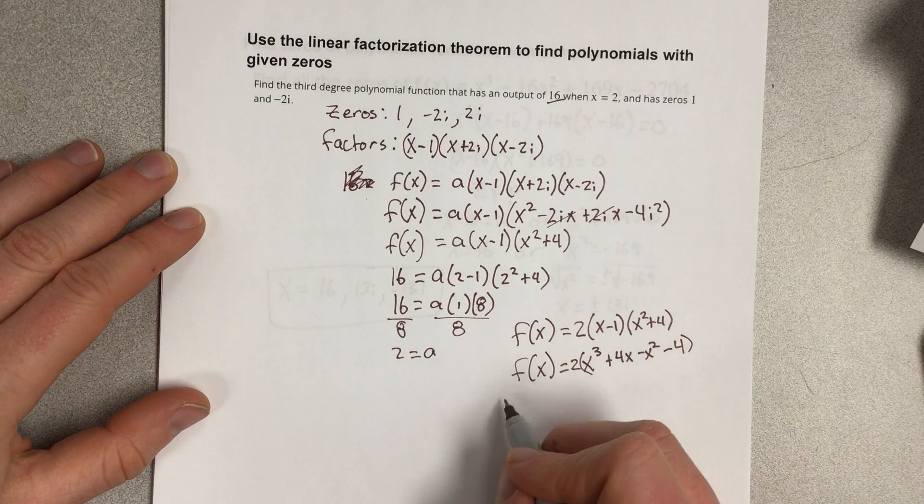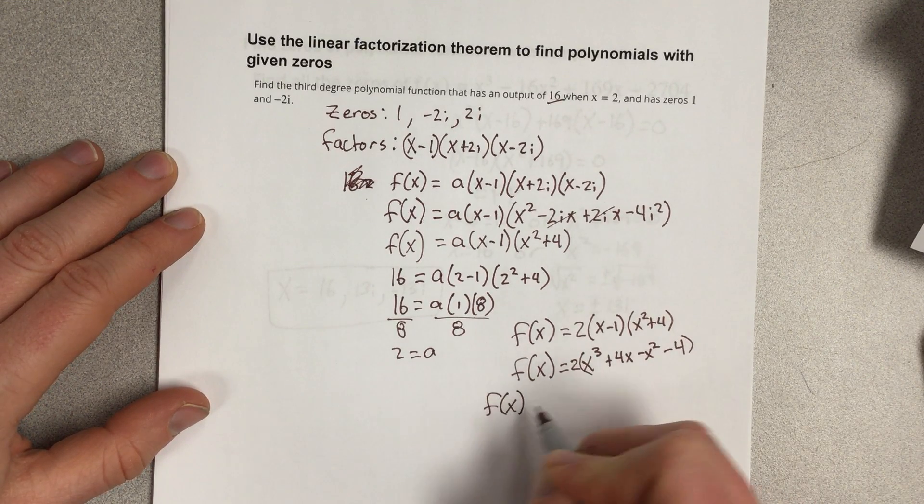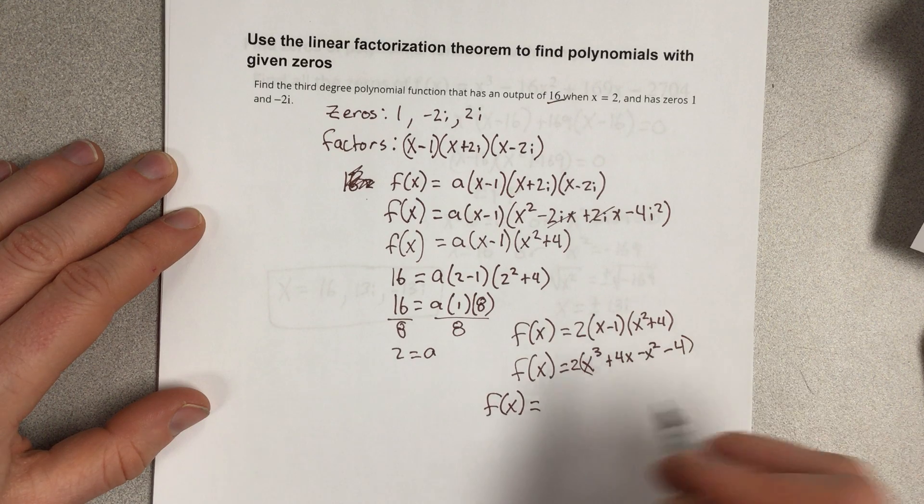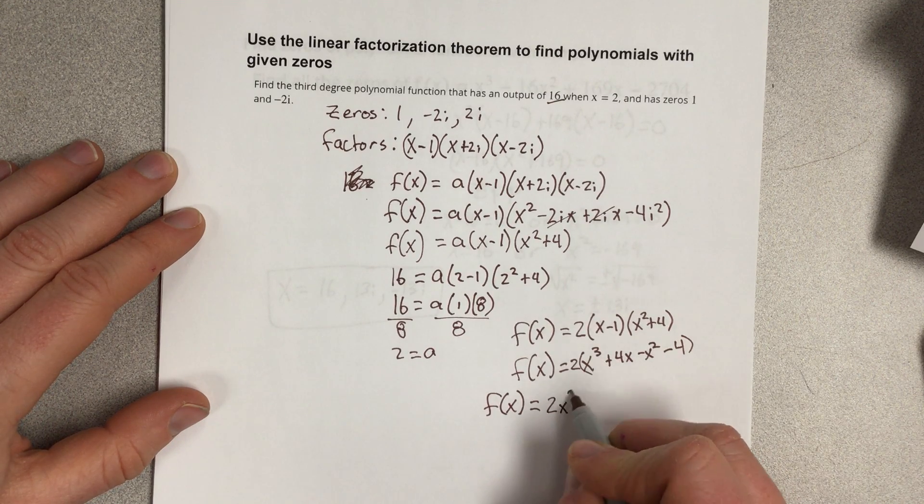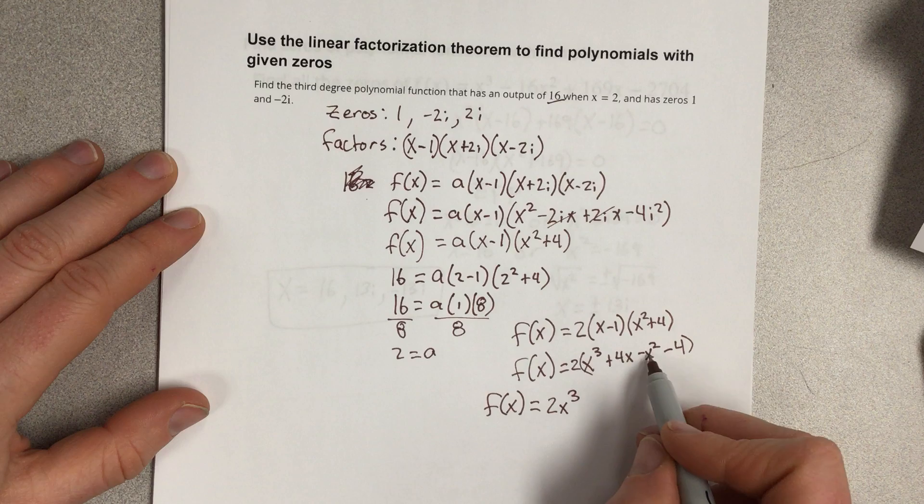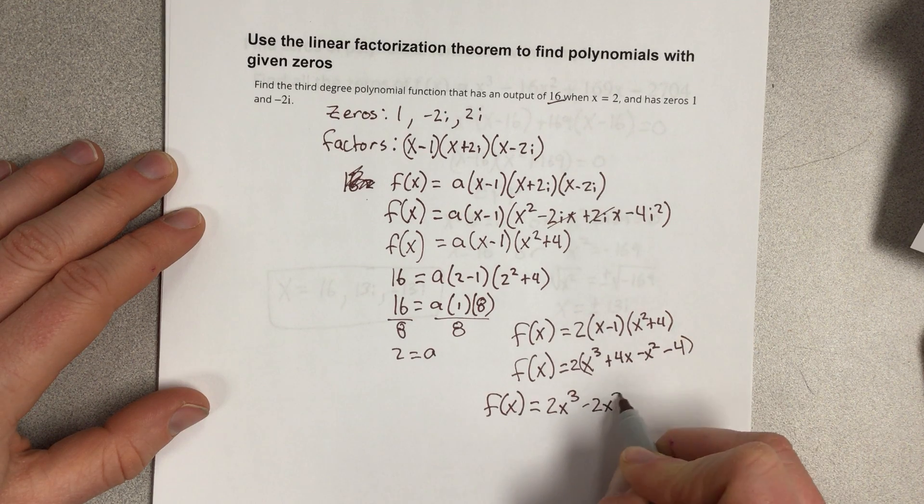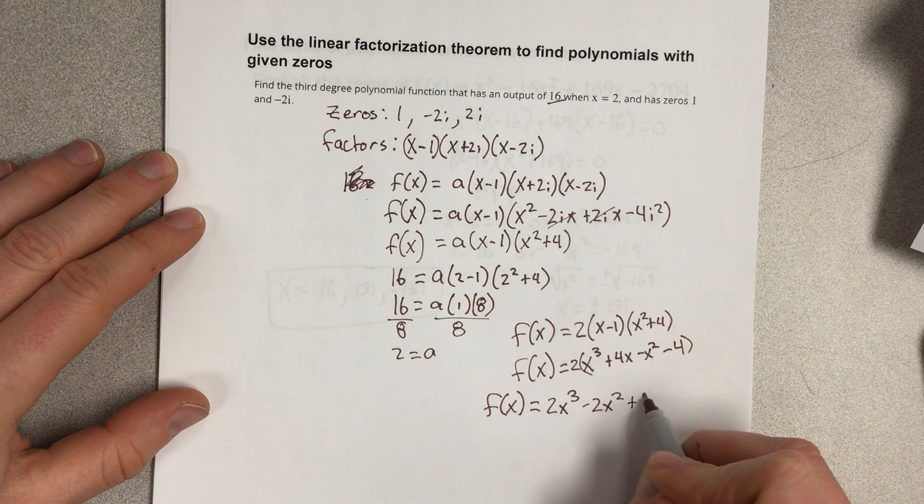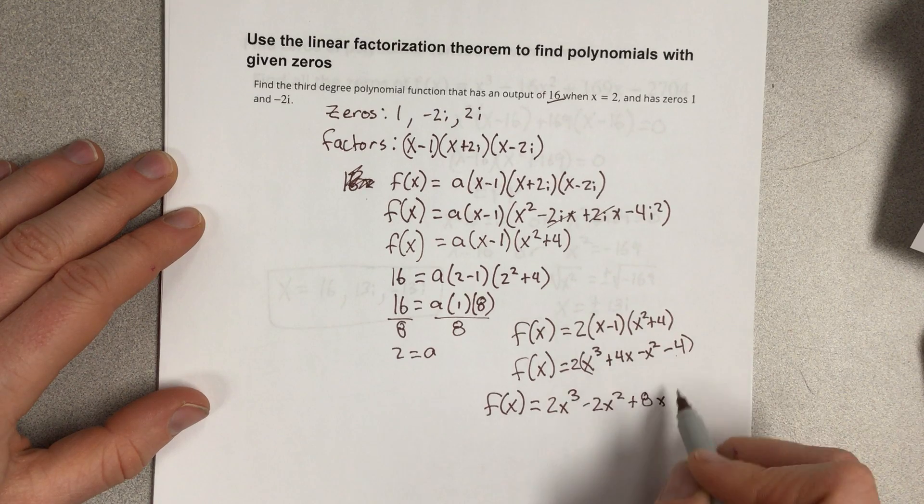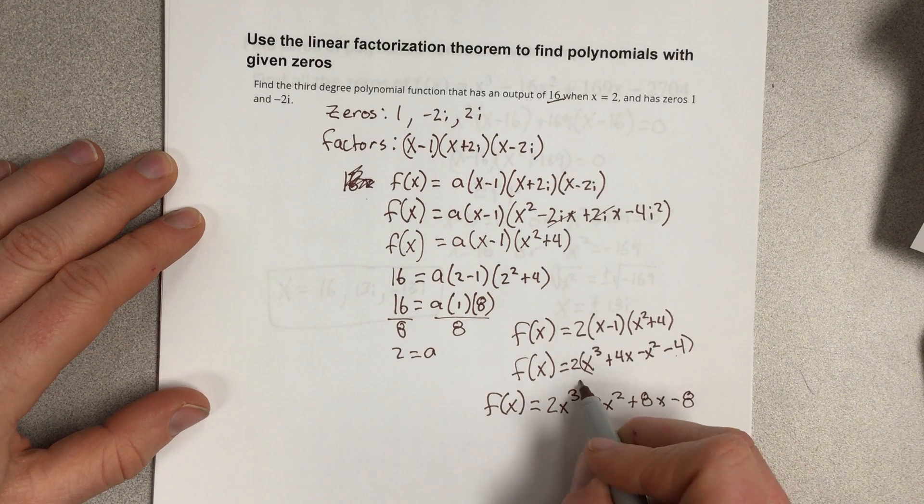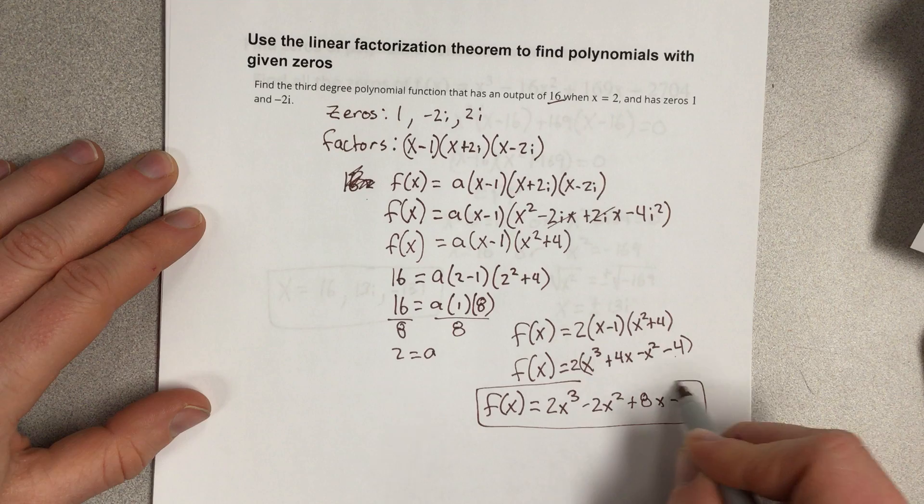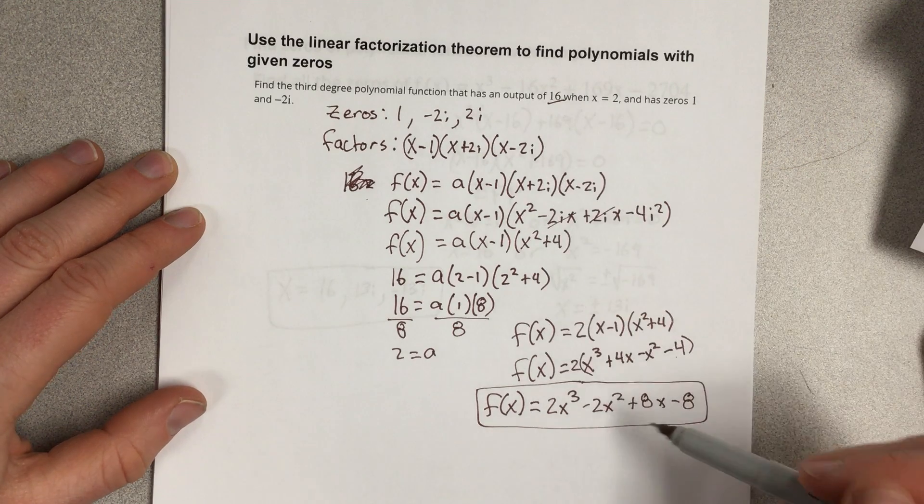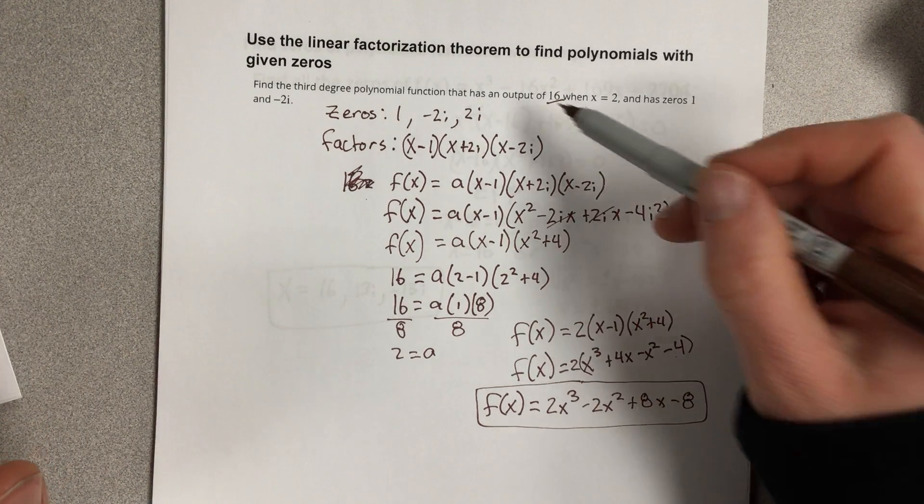So then I can write this as f of x is equal to, if I distributed 2 to all of those, I get 2x cubed. 2 times negative x squared would be negative 2x squared. 2 times 4x is 8x. And 2 times negative 4 is negative 8. And so, based on the information they gave us, this would be our polynomial that has that information.